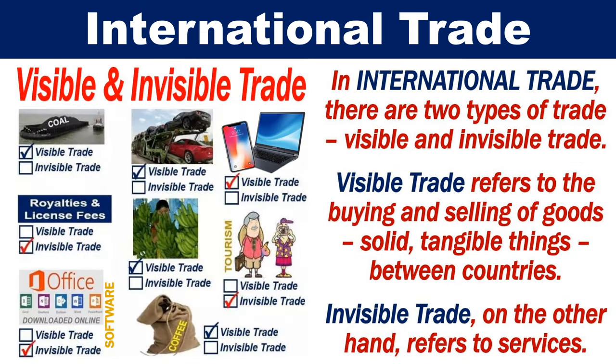There are two types of international trade: visible and invisible trade. Visible trade refers to the buying and selling of solid, tangible goods between countries, while invisible trade refers to the buying and selling of services.